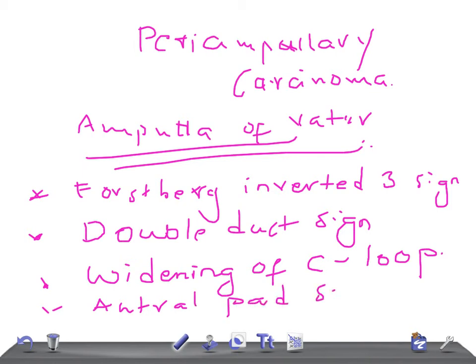So what are the radiological features of periampullary carcinoma? Frostberg inverted 3 sign, double duct sign, widening of the C-loop, and if it's carcinoma of the head of the pancreas, then the antral pad sign. Just Google the images, guys. Thank you so much for watching this video, take care.